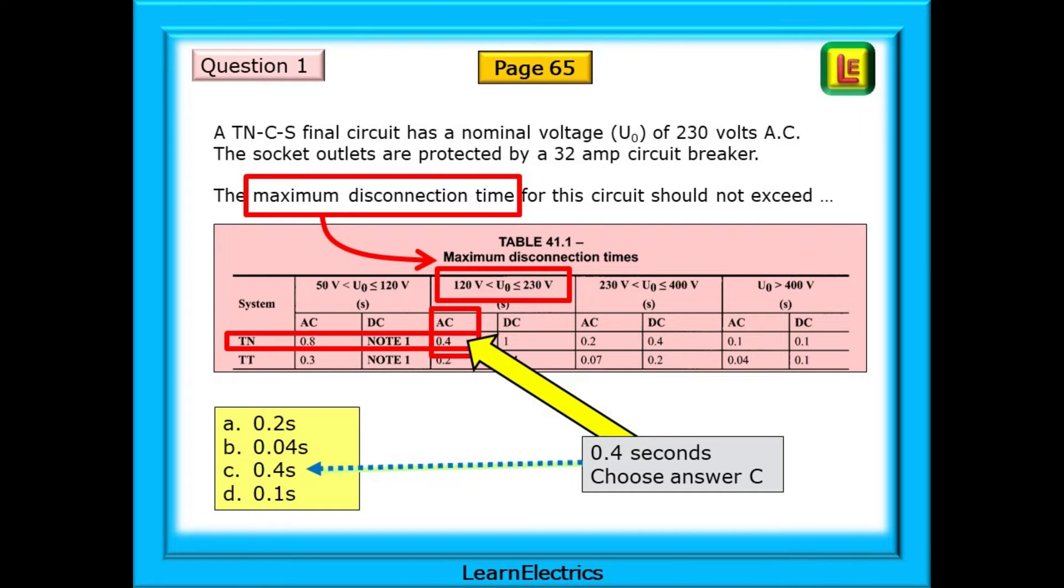All the information that we need is in the question. It's a 230 volt nominal circuit, so we want the second block of data, with the voltage between 120 volts and up to, but not exceeding, 230 volts. It's an AC circuit, and the question tells us it is TNCS, so the TN row is the one that we want. Where the AC column and the TN row cross is our answer, 0.4 seconds. This is our answer, and we should choose answer C.